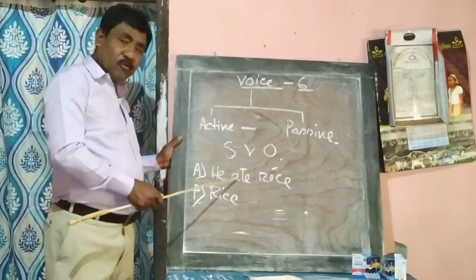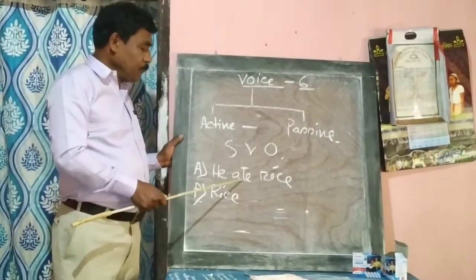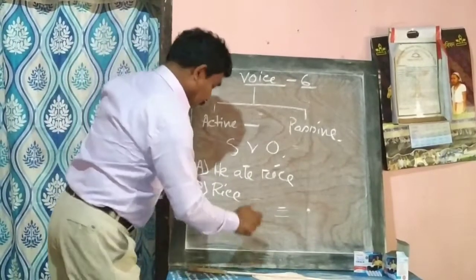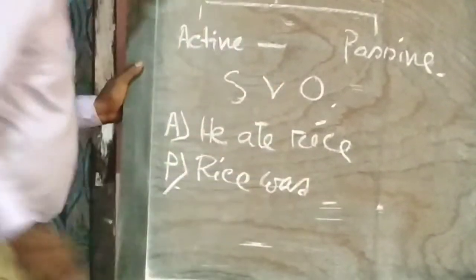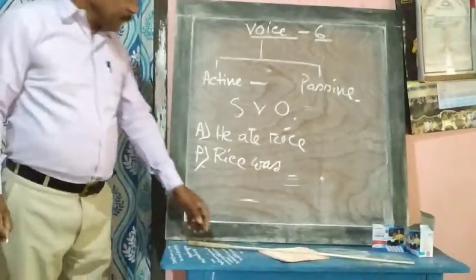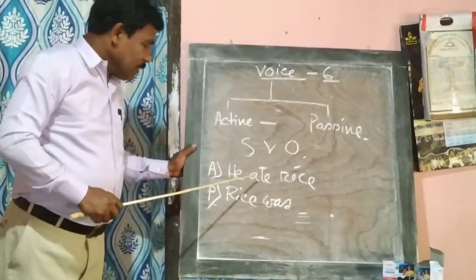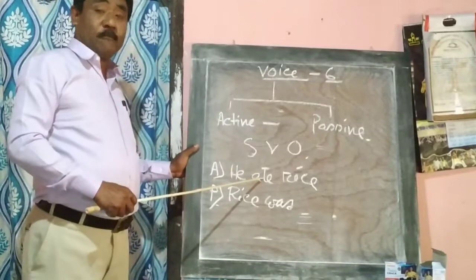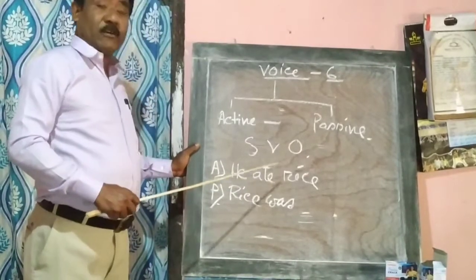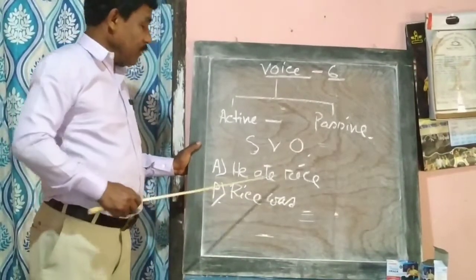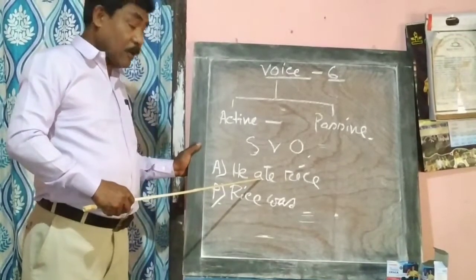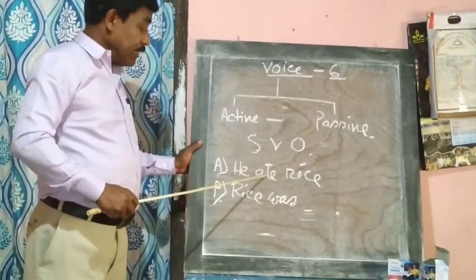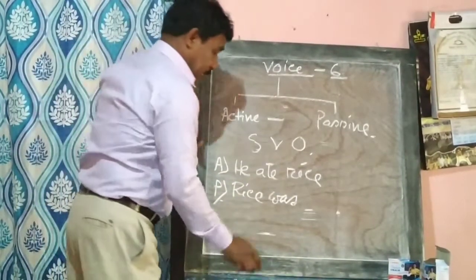To form passive voice, we use a 'be' verb. The main verb changes to its past participle form. So the verb becomes 'eaten': rice was eaten.